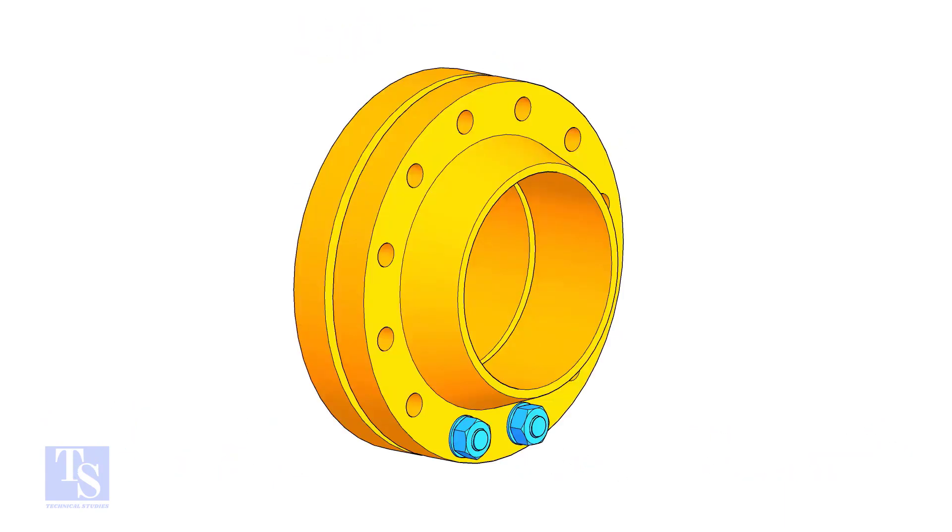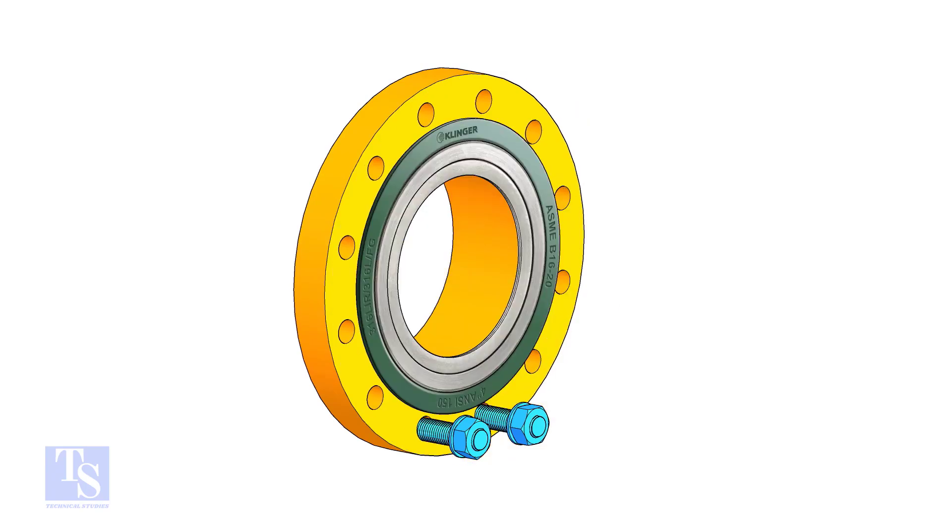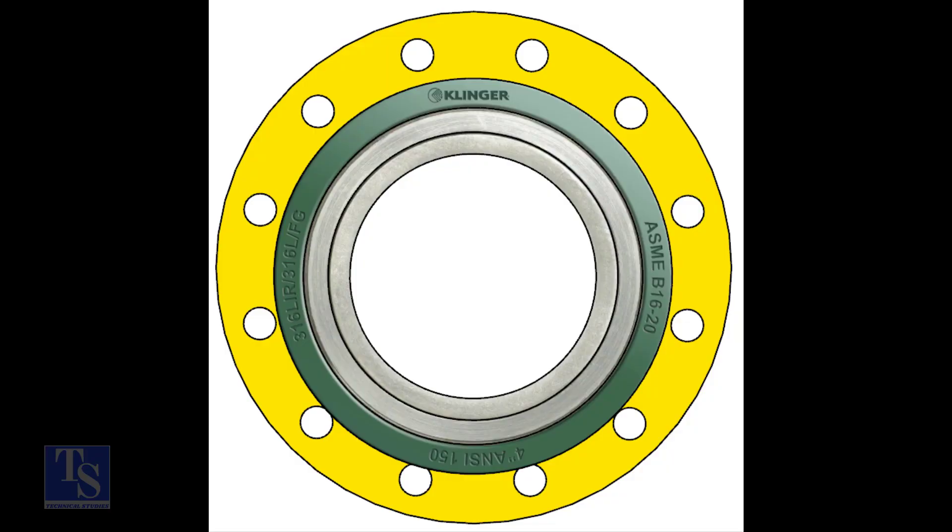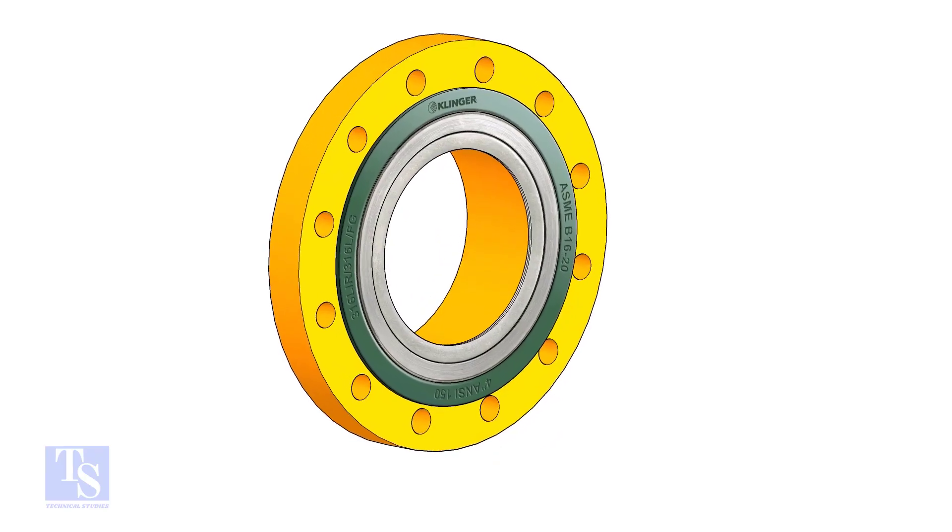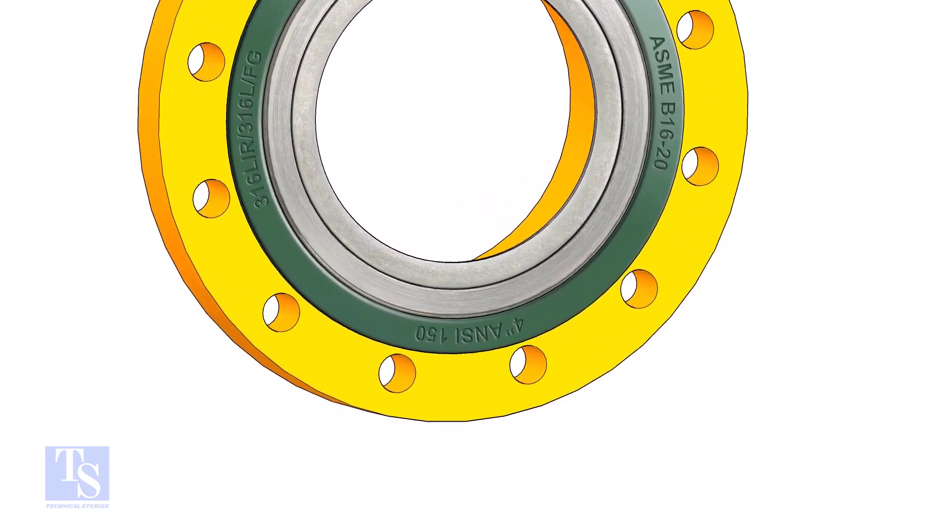Put two bolts in the adjacent bottom side holes. Put the gasket between the flanges. Now the gasket sits eccentrically between the flanges. We need the gasket to sit exactly in the center of the flanges.